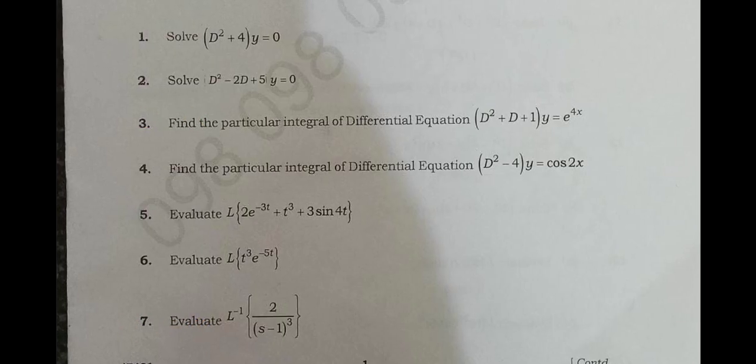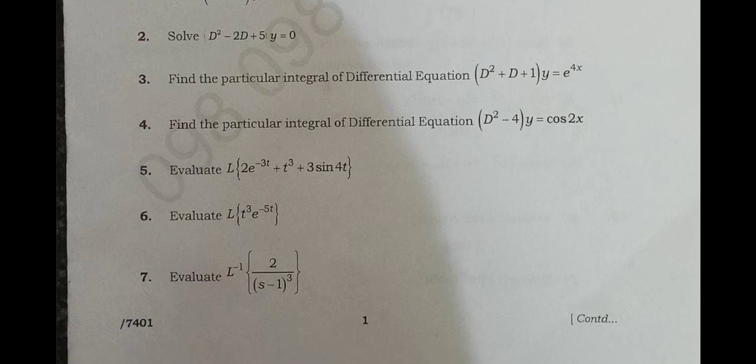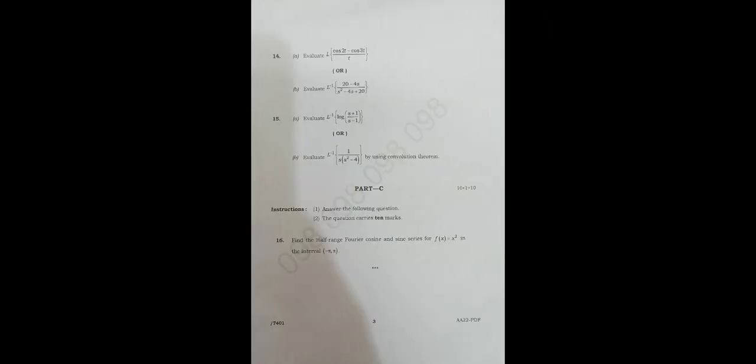Evaluate Laplace of 2e^(−3t) + t³ + 3sin(4t). The sixth question is evaluate Laplace of t³ · e^(−5t). And the seventh question is inverse Laplace of 2/(s−1)³. This is the total of the first seven questions.